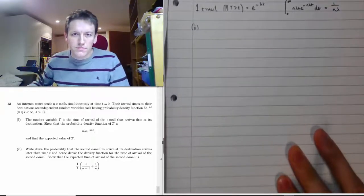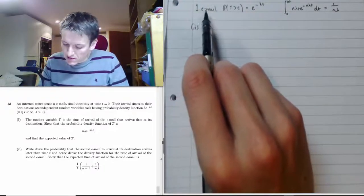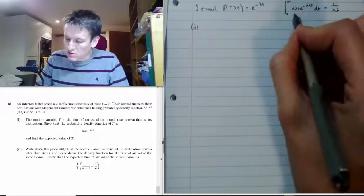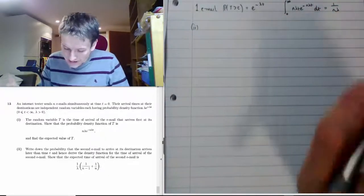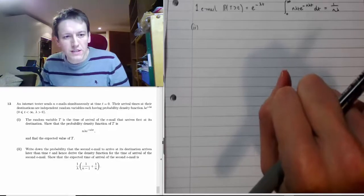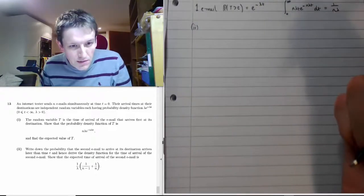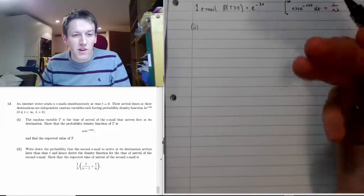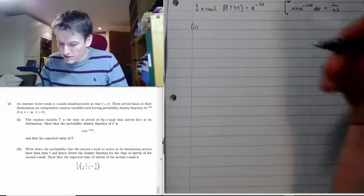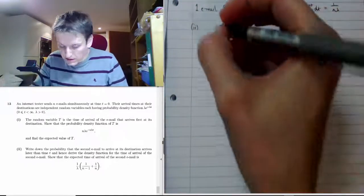For part 2, we summarise two results from part 1 to reuse: the survival probability for a single email is e^(−λt), and the integral we computed gives E[T] = 1/(nλ). Part 2 asks us to write down the probability that the second email to arrive does so later than t, then derive its PDF and show the expected arrival time matches a given formula. Let s denote the arrival time of the second email.